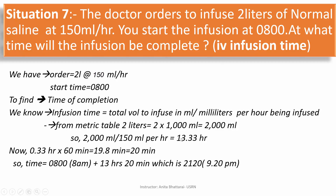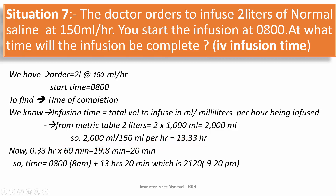We have 13.33 hours, so now let's convert 0.33 hours into minutes. To convert to minutes, we multiply by 60: 0.33 × 60 gives 19.8 minutes, which rounds to 20 minutes. So the total time needed for the infusion of 2 liters at 150 ml per hour is 13 hours 20 minutes.